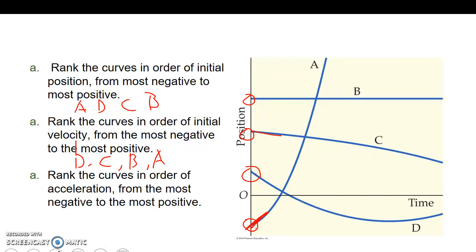Now, in order of acceleration, from the most negative to the most positive. The most negative acceleration is the one that curves down this way the most, D. Then I would say C, and then I would say A. It's very similar to ranking the curves in order of initial velocity.